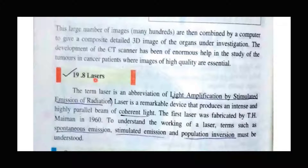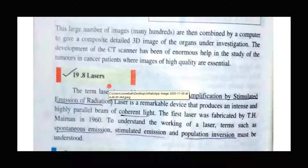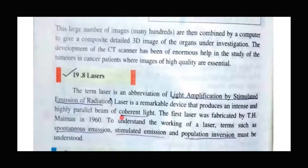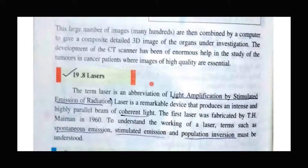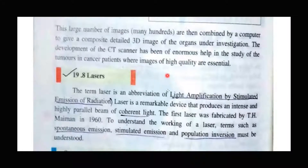Lasers are highly coherent and monochromatic. Monochromatic means the laser beam or light that comes out will always be a single wavelength. Coherent means tightly focused — the laser beam travels in a straight line and will not spread, unless there is an obstacle. This tight focusing is coherence.